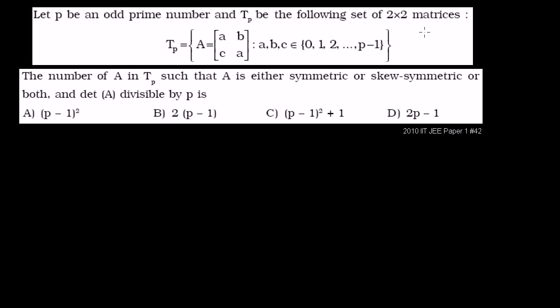Let p be an odd prime number, and T_p be the following set of 2x2 matrices. Each member A is made of entries lowercase a, b, c, and a, where these can take any values between 0 and p minus 1. All prime numbers greater than 2 are odd. We want to find the number of matrices A in T_p such that A is either symmetric or skew-symmetric, and the determinant of A is divisible by p.